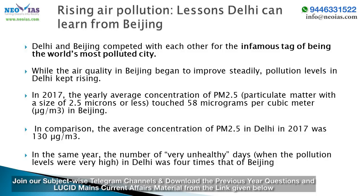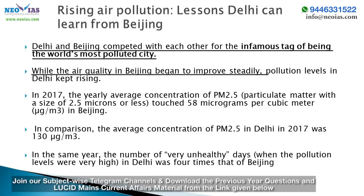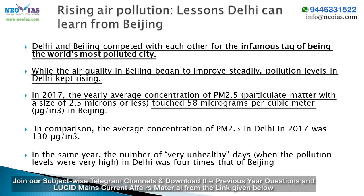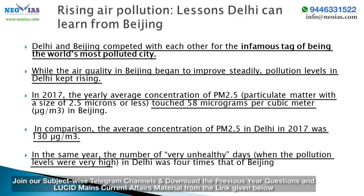Comparing air pollution in Delhi and Beijing: Delhi and Beijing competed for the infamous tag of world's most polluted city. While Beijing's air quality began to improve steadily, Delhi's pollution levels kept rising. In 2017, the yearly average PM2.5 concentration touched 58 micrograms per cubic meter in Beijing. In comparison, Delhi's average PM2.5 in 2017 was 130 micrograms per cubic meter — more than double. In the same year, the number of very unhealthy days in Delhi was 4 times that of Beijing.